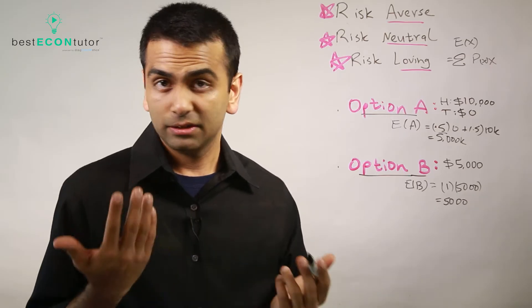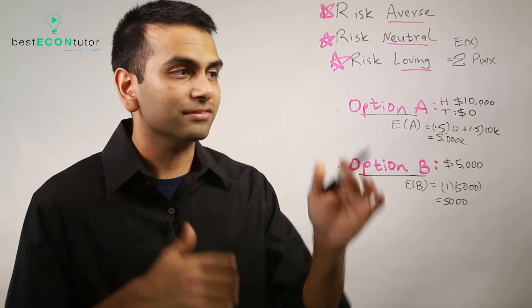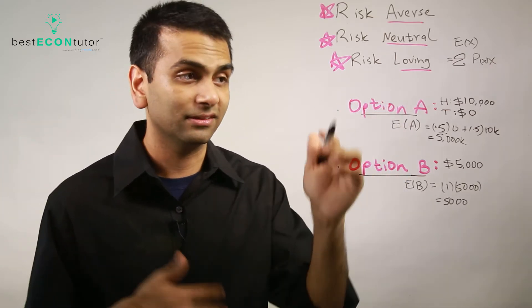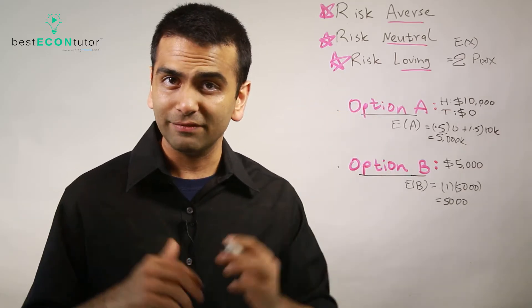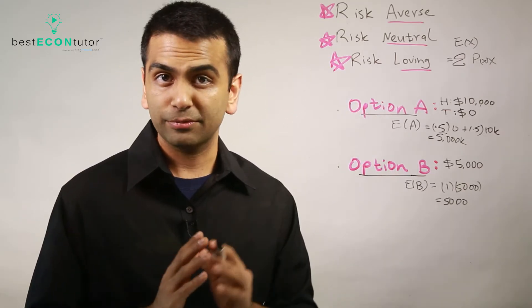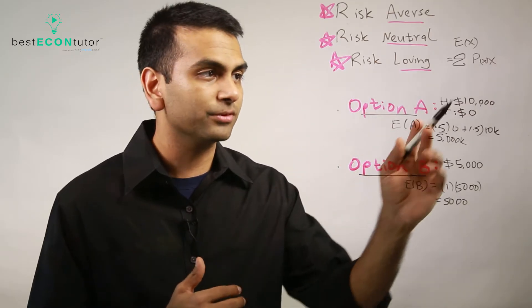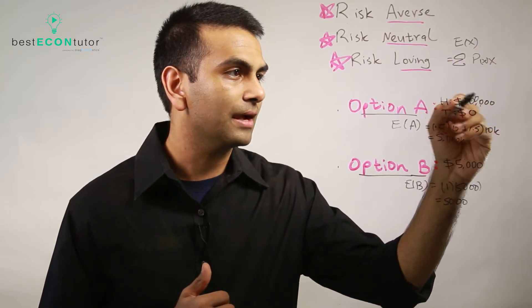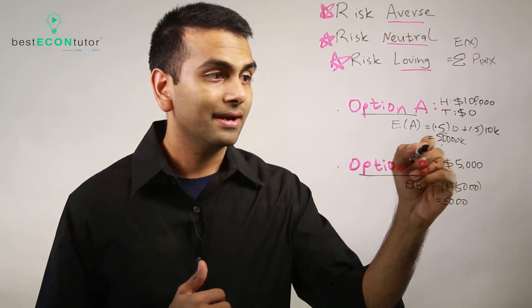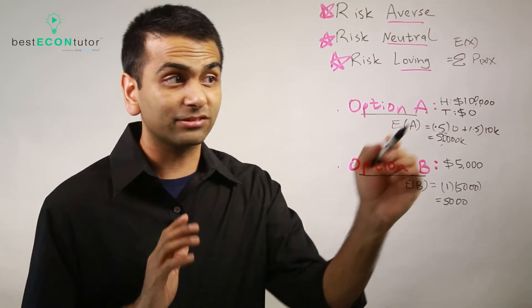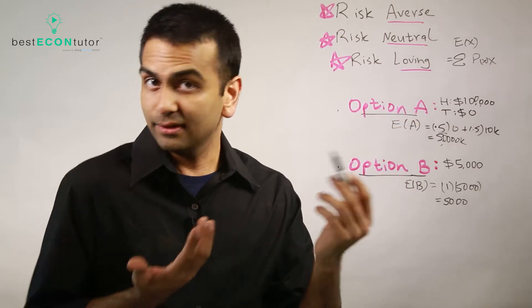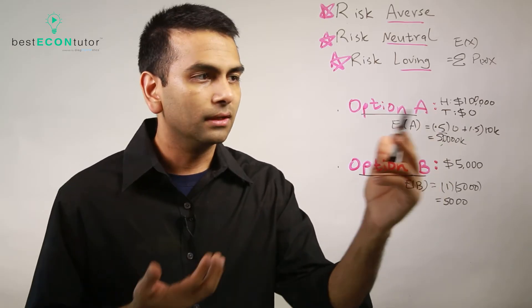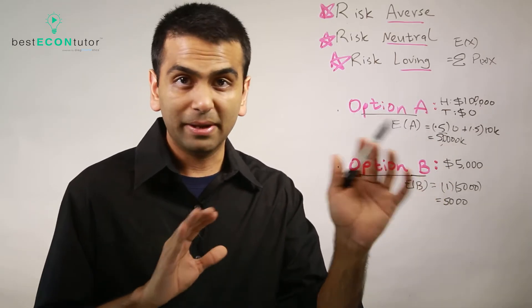Anyone who's risk neutral will simply pick the option with the higher expected value — or be indifferent when they're equal. A risk neutral person thinks: on average I'll get about five grand either way, so I don't care. A risk averse person — which is probably most of you — would think: they have the same expected value, but do I really want to risk getting zero? I'd rather just take the $5,000 for sure. That person is risk averse.